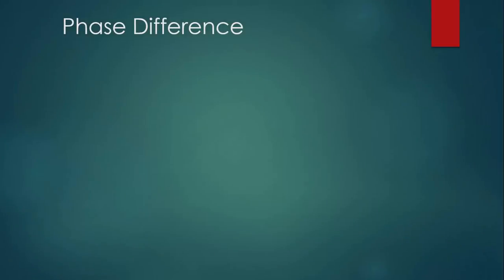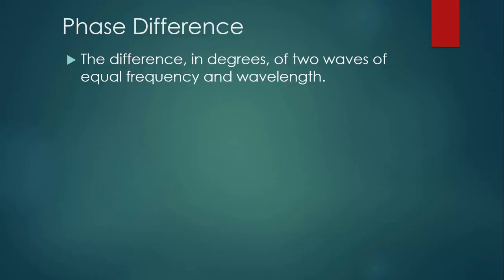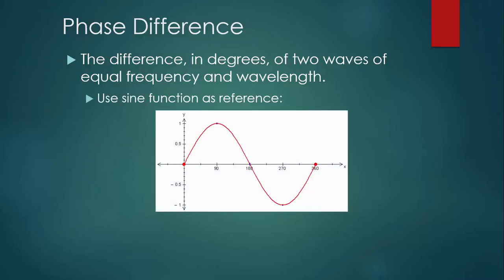One way that we can explain whether two waves will constructively or destructively interfere is by talking about their phase difference. This is the difference in degrees of two waves of equal frequency and wavelength. Let's take a look at the sine function and use this as a reference. The sine curve looks like a transverse wave — it has a crest and a trough. The crest of a sine wave happens at 90 degrees, and the trough happens at 270 degrees. We're going to use these two numbers to help us understand phase difference.